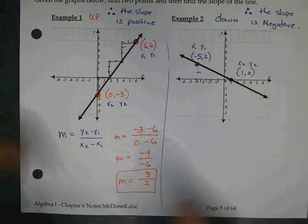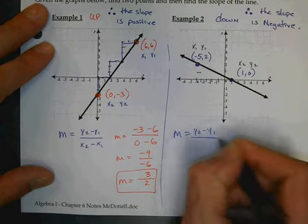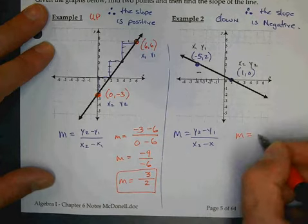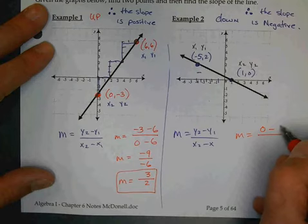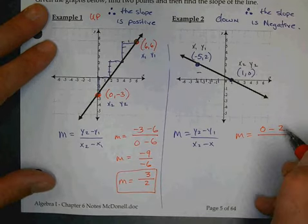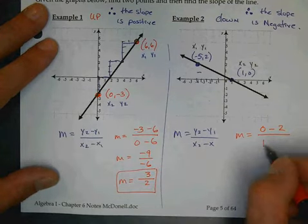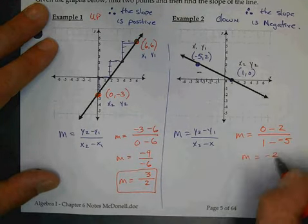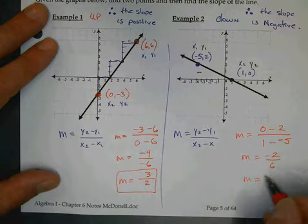So let's write our equation. M equals y2 minus y1 over x2 minus x1. So what's my y2 value? 0. Minus? 2. Good job, Nate. Elizabeth, do my other one. What's my x2 value? 1 minus negative 5. Alright. So that's negative 2 over 6. Reduce it. What do I get? Negative 1 third.